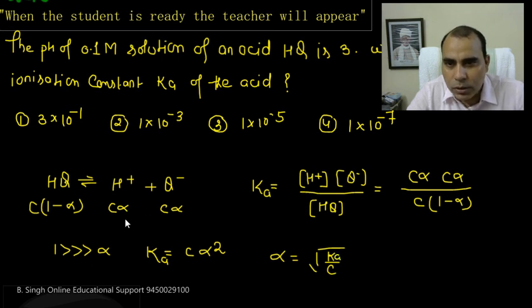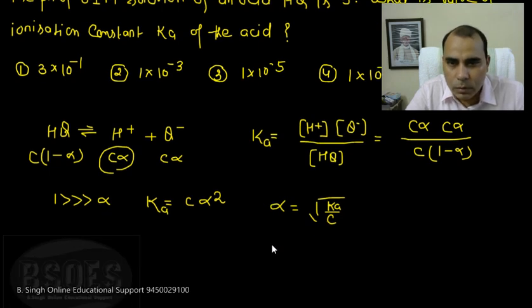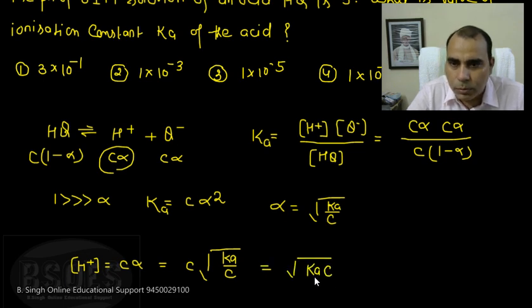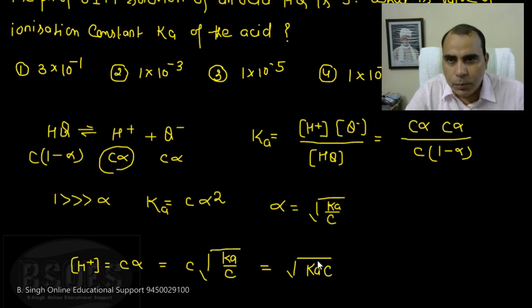Hydrogen ion concentration is c alpha. So hydrogen ion concentration equals c times square root of Ka upon c, which becomes the square root of Ka times c.